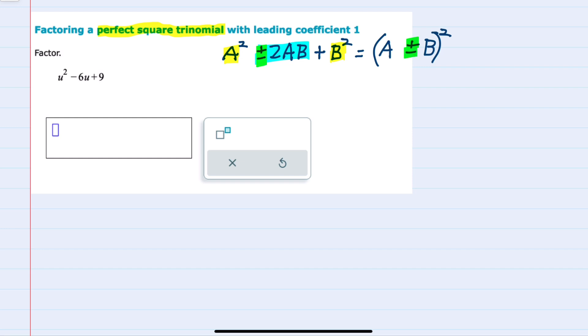So with this form, we can look at our example here and see if we can write it in that perfect square trinomial form. First, looking at the leading term, can I write it as a perfect square? It's already u squared. But to emphasize that, I'll write it as u being squared.